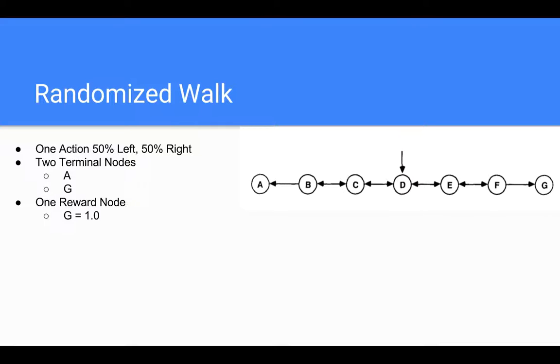There's only one reward node, and that's the G node at the very right. So the only way you can get a reward out of this is if you happen to end up at G.